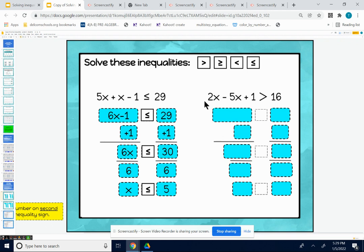Add those together. A 2x and a negative 5x is a negative 3x. Bring the rest of the problem down. We have negative 3x plus 1 greater than 16. Inequality symbol is greater than.